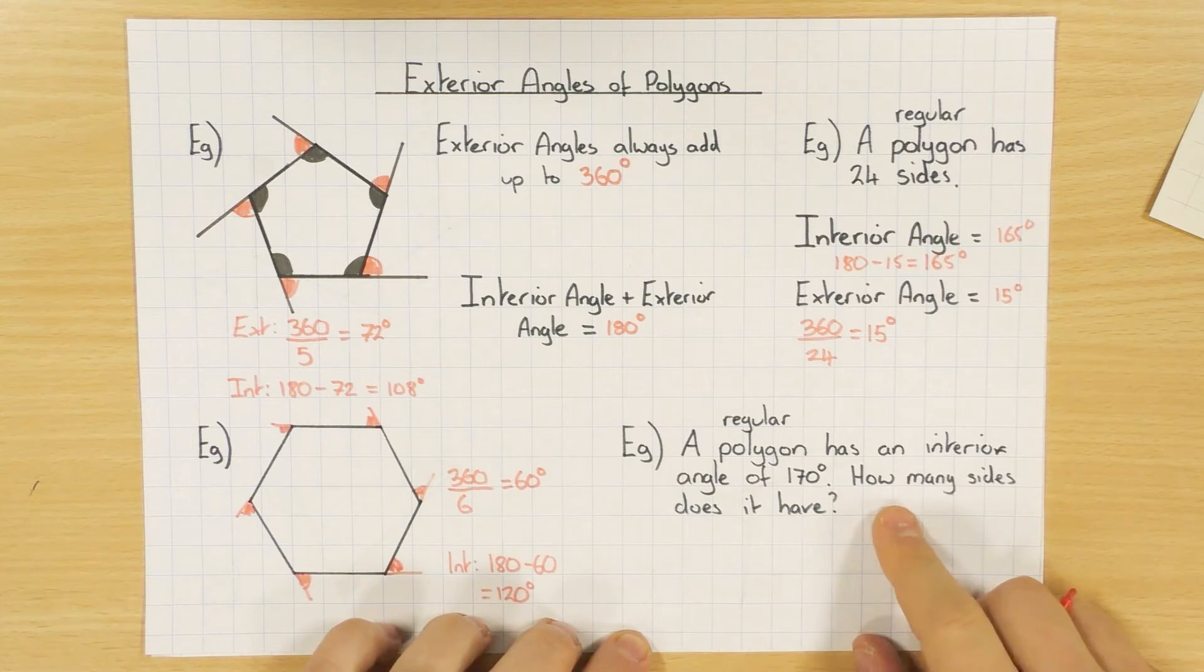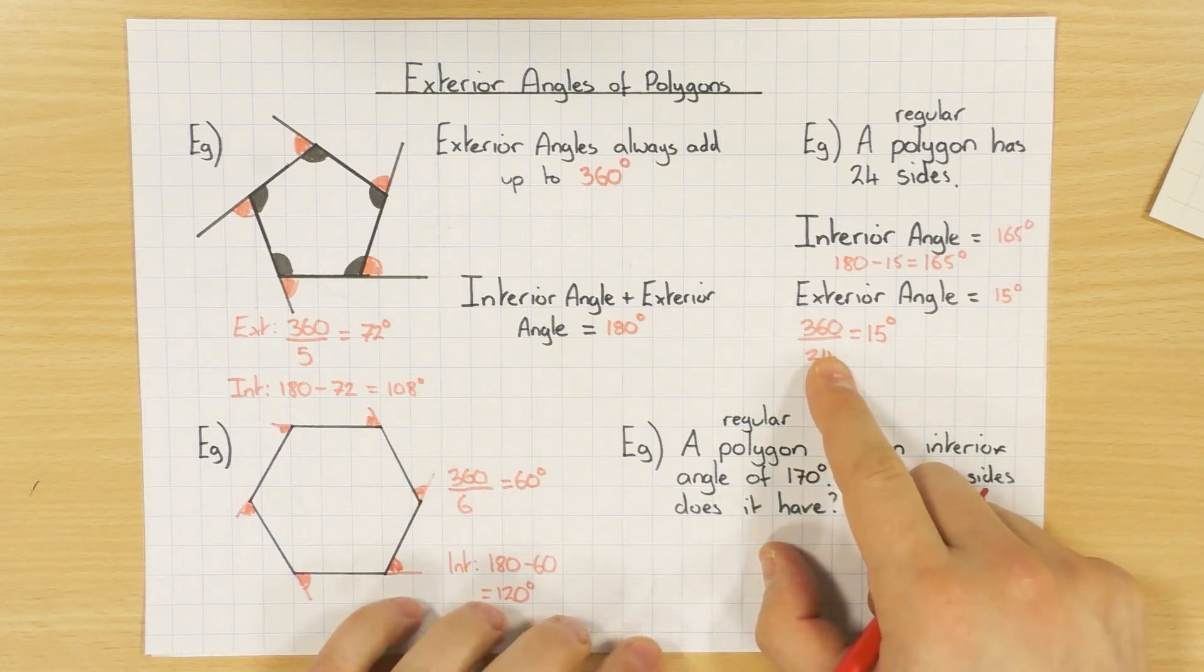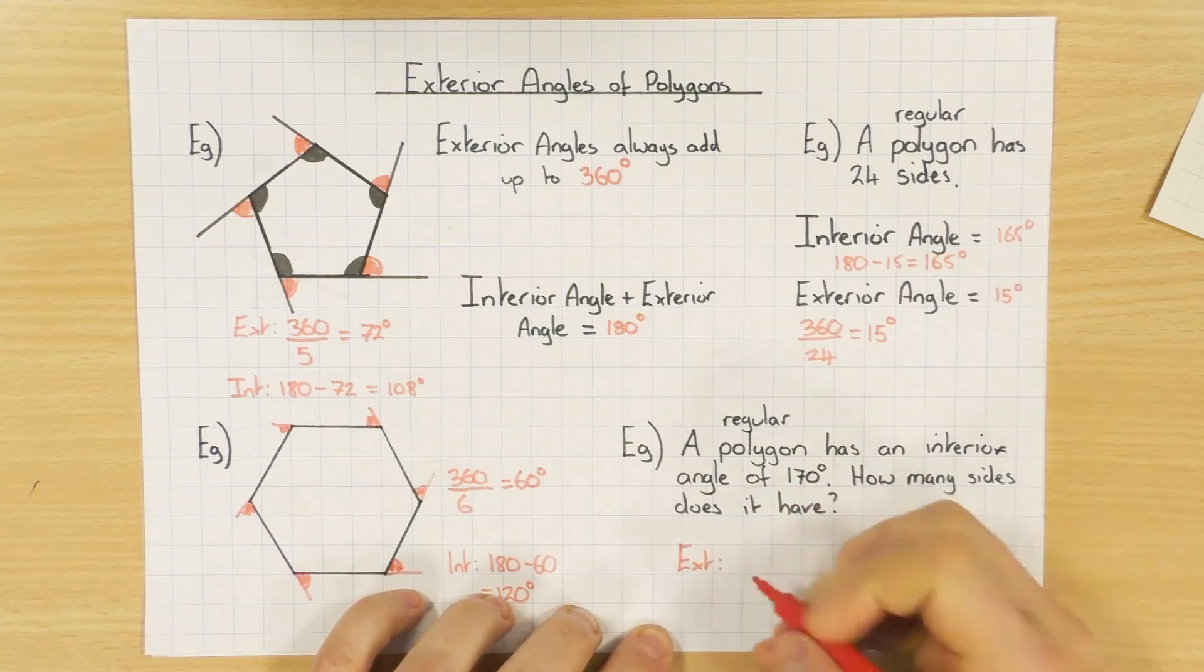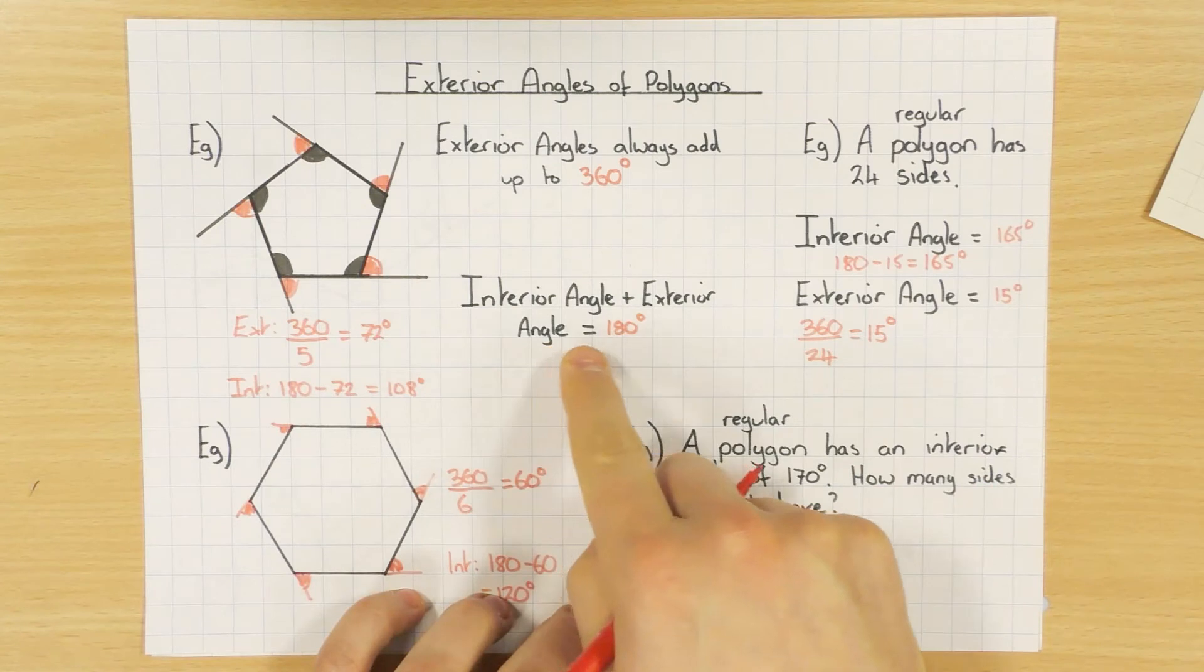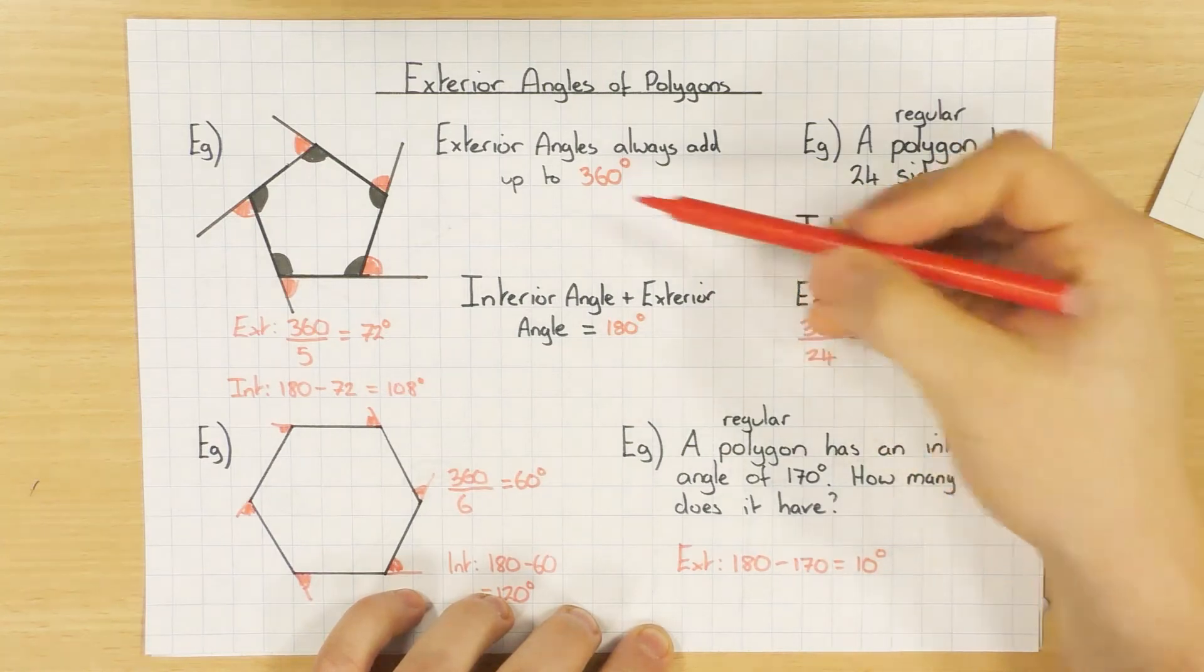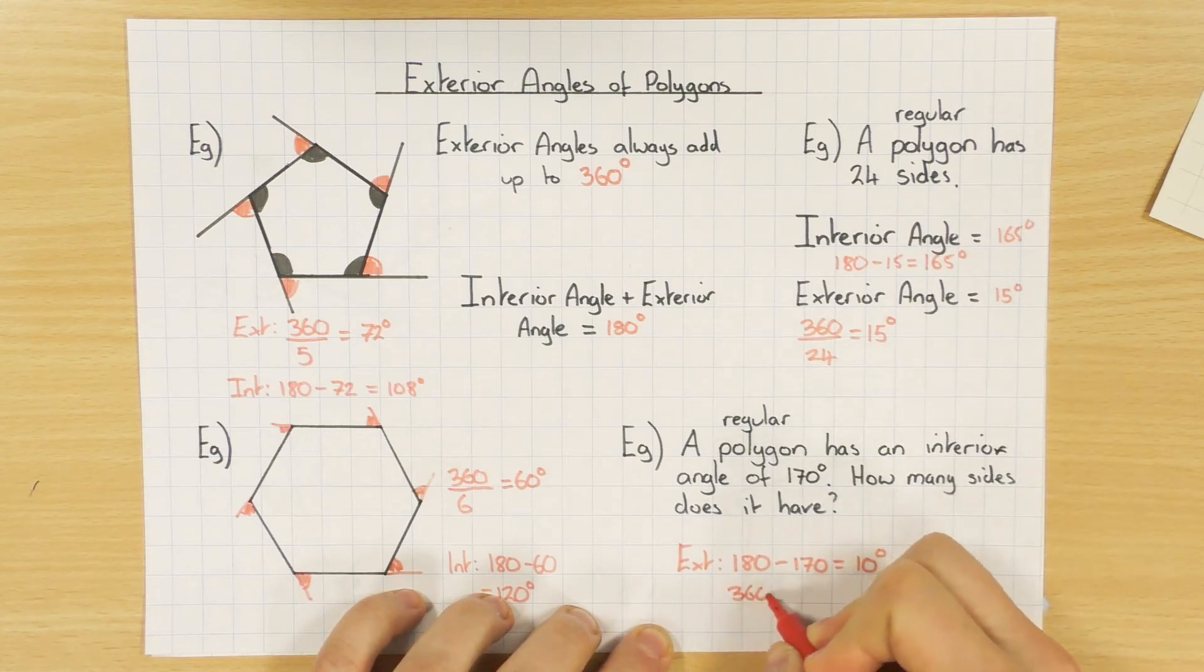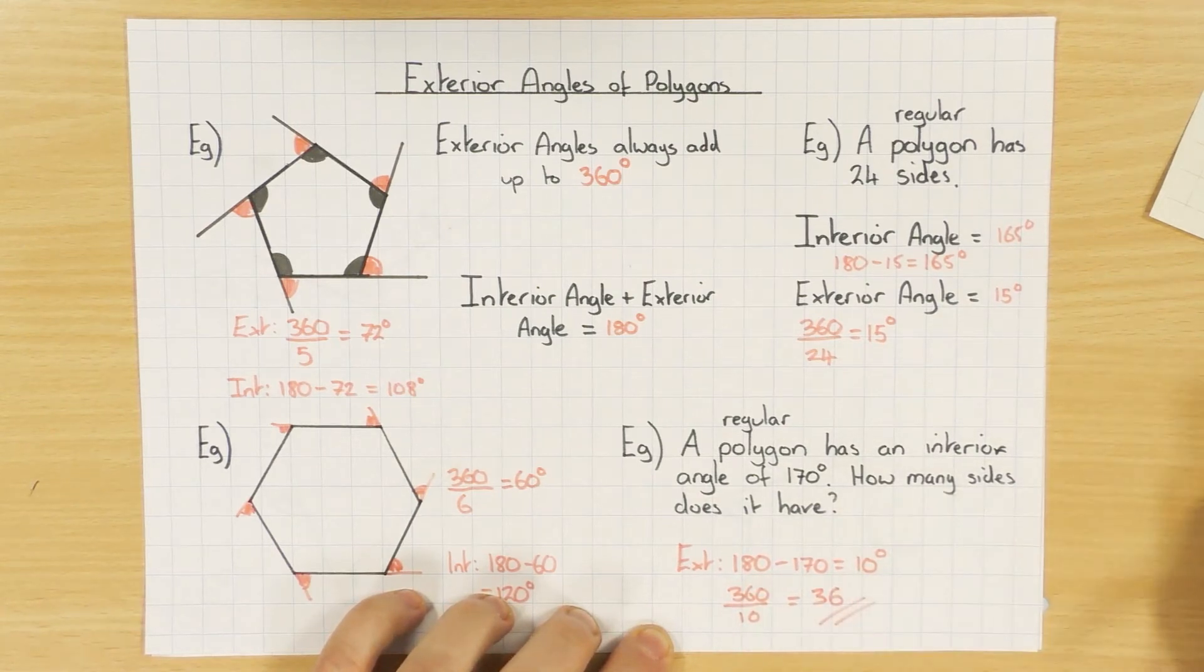Using the same trick, we can also answer this one. A regular polygon, so all the angles are the same size. A regular polygon has an interior angle of 170 degrees. How many sides does it have? So I can't use this trick, because I don't know the exterior angle yet. That's what I'm going to work out first. To work out the exterior angle, if I know the interior is 170, I just do 180 minus 170. Because using this rule here, they both add up to 180. And that tells me the exterior angle is 10 degrees.